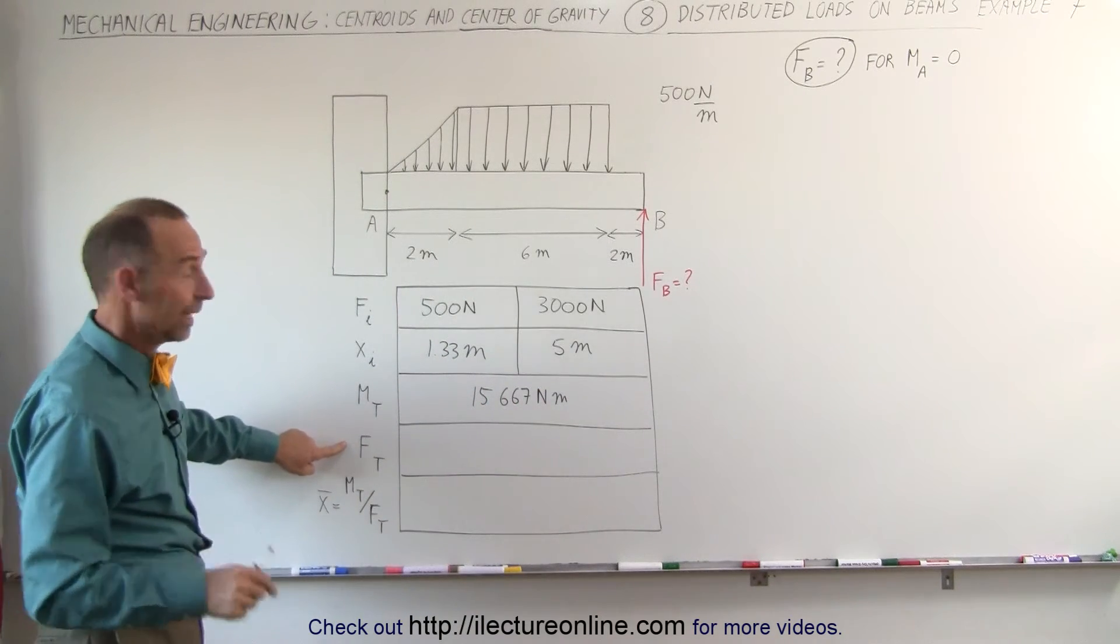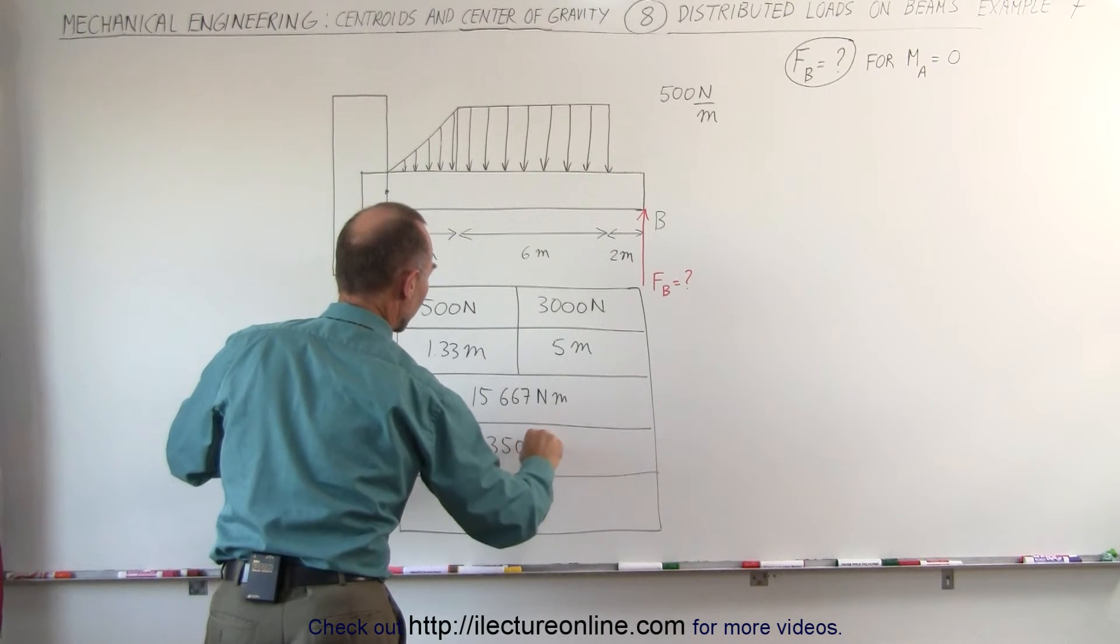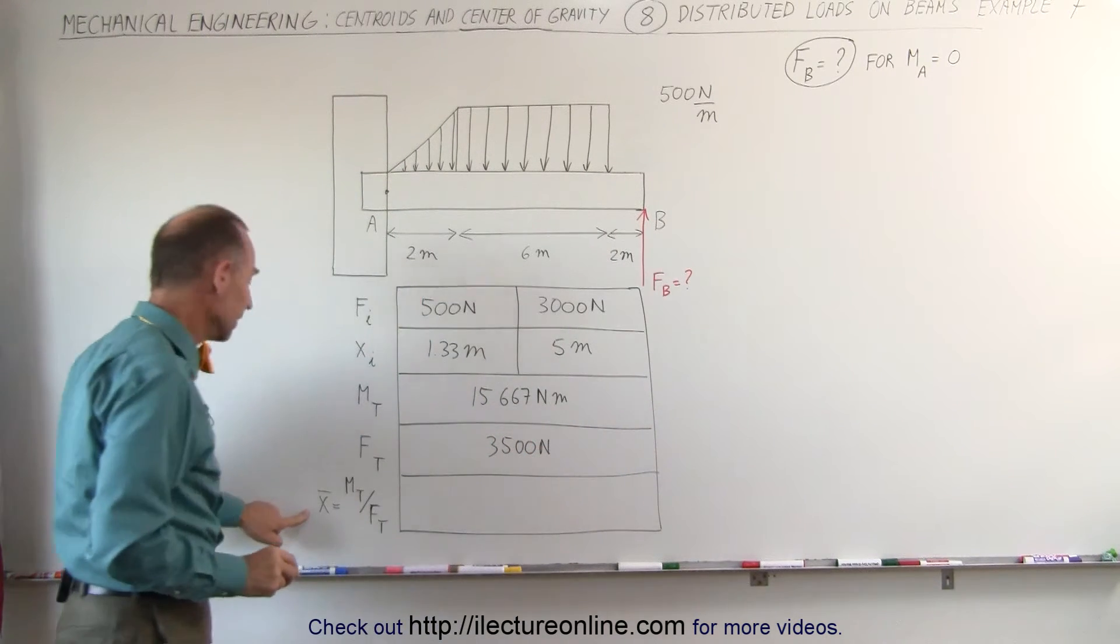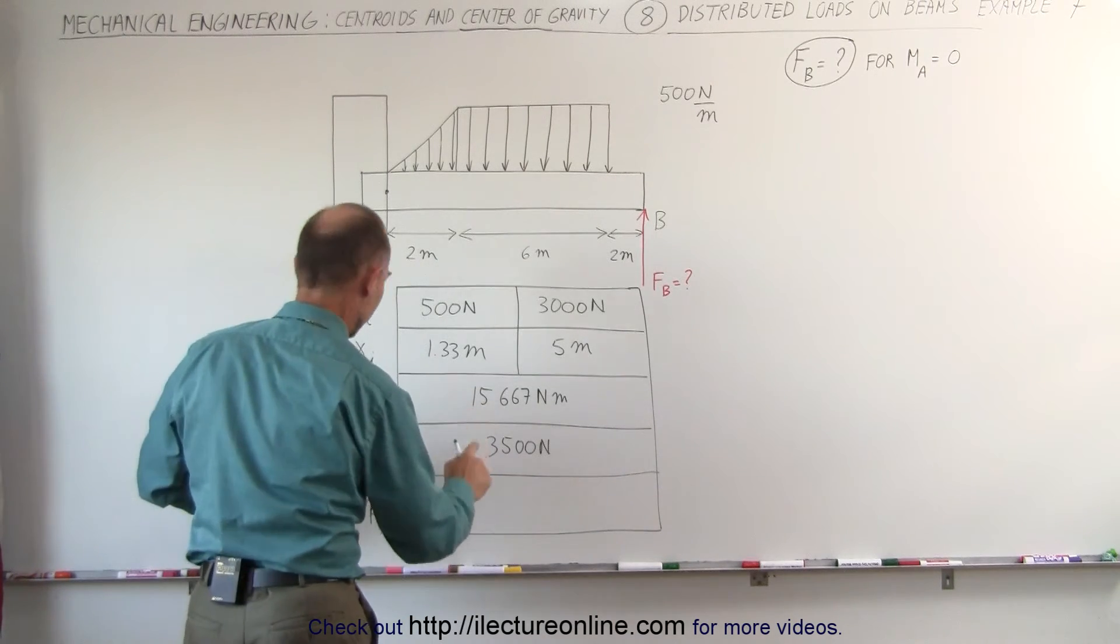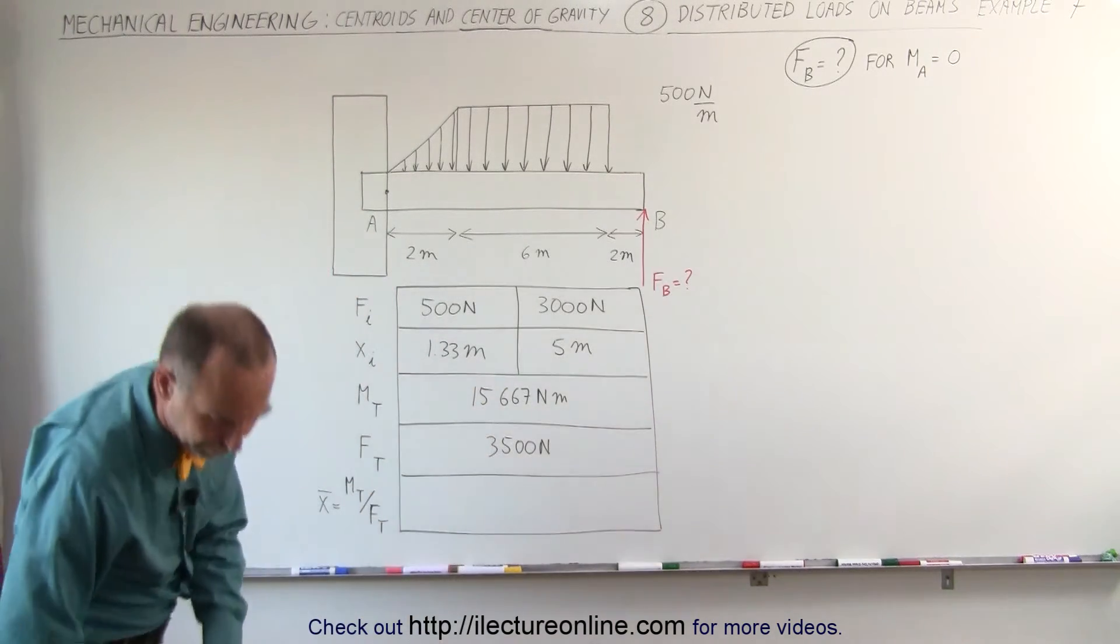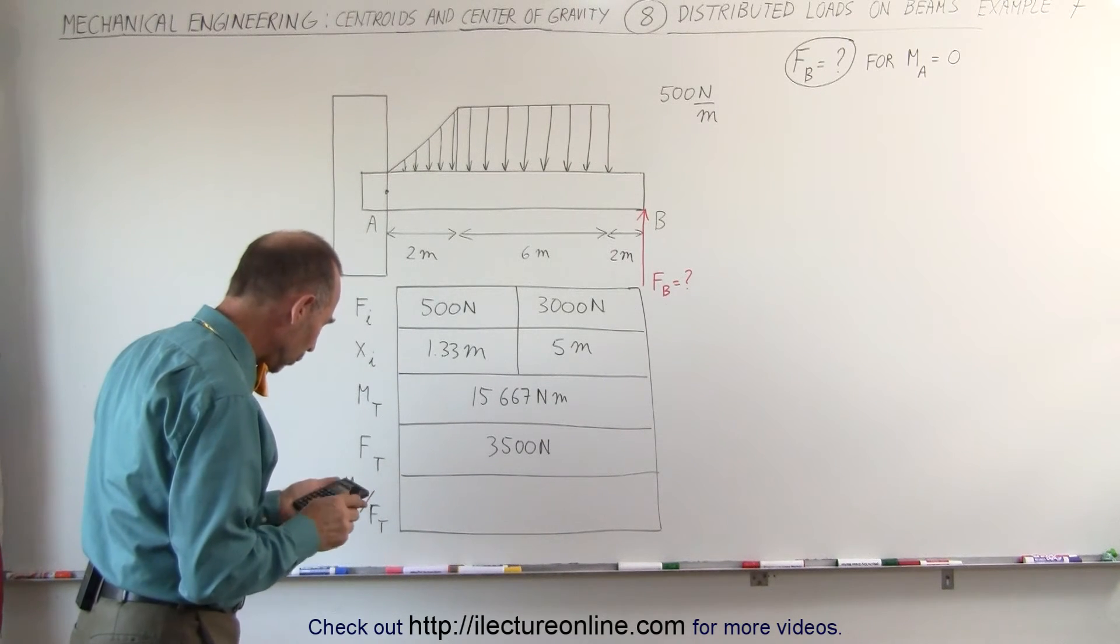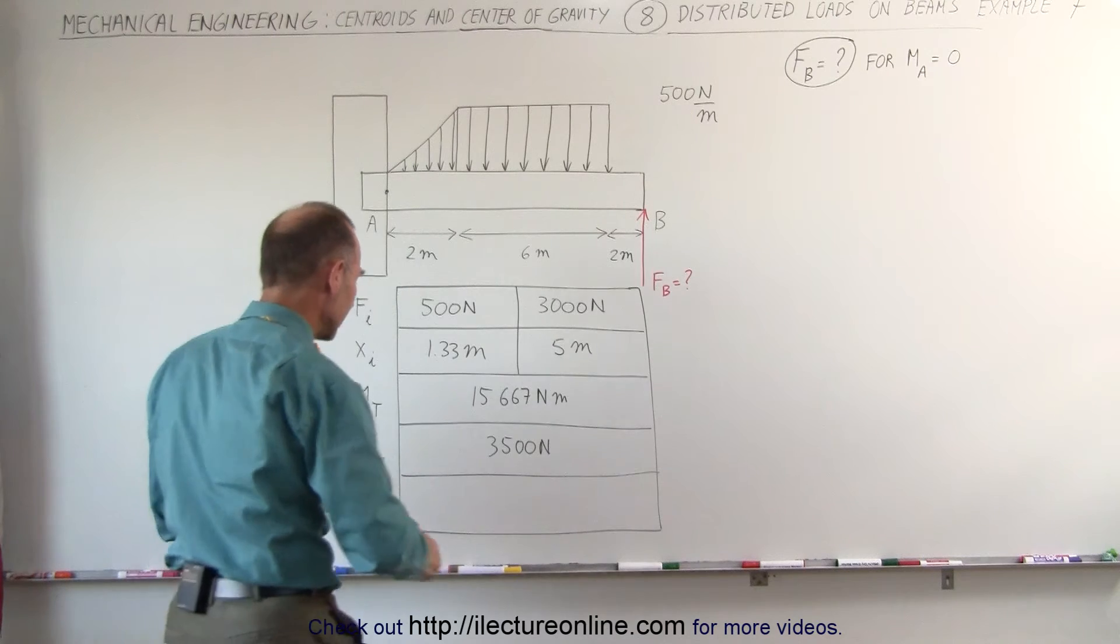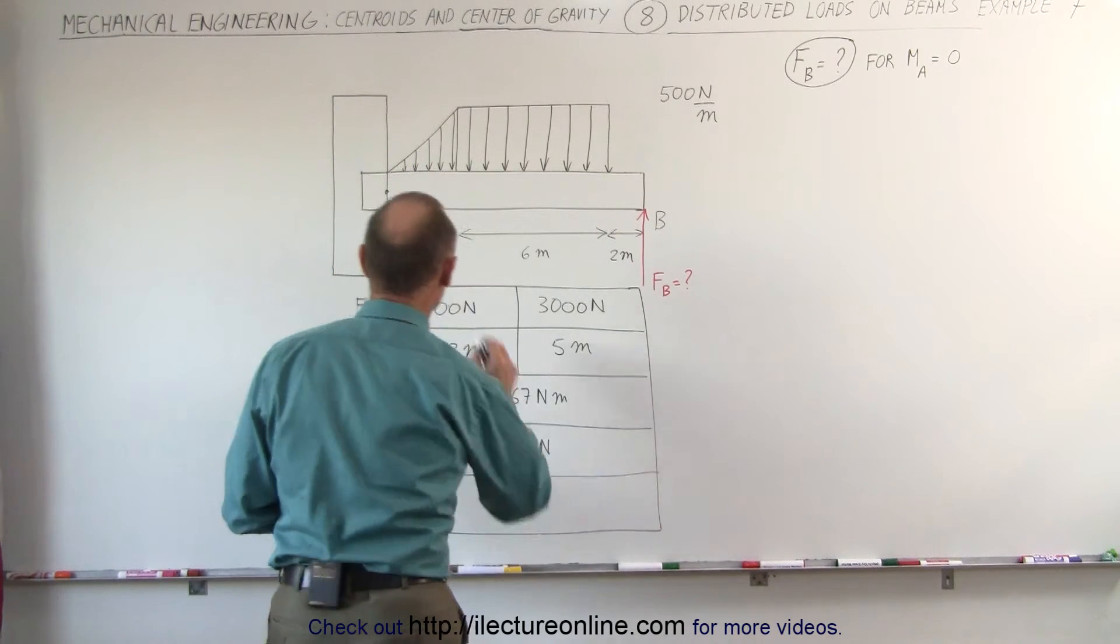The total force is the two forces added together, 3,500 Newtons. And finally, the x-coordinate of the centroid would be the total moment divided by the total force. And that would be 4.48 meters, 4.48 meters from point A.